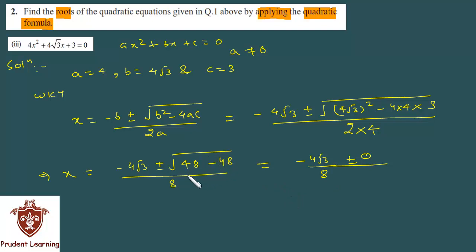Aapka yeh discriminant hi hota tha. Root ke andar jo likhte hai hum, voh discriminant hota. Discriminant agar zero hai ya greater than zero hai, tab roots exist karte hai. Toh abhi zero aaya, iska matlab roots exist karte hai. Less than zero hota, koi negative quantity aati, toh real root exist nahi karte hai, aur hum aage solve bhi nahi karte hai. Thik hai?